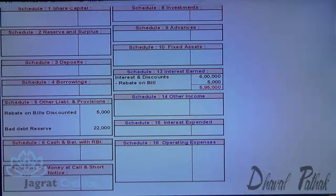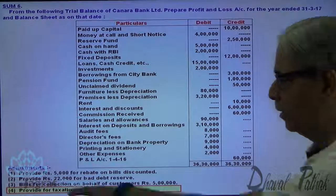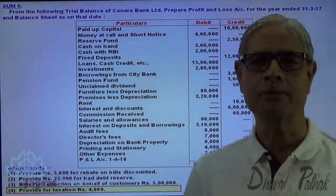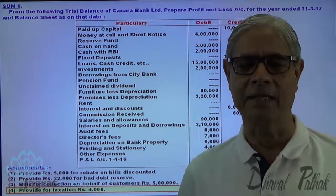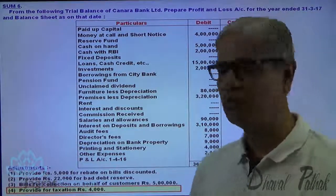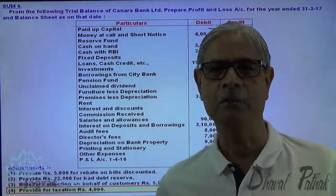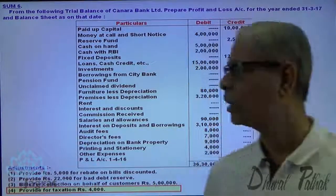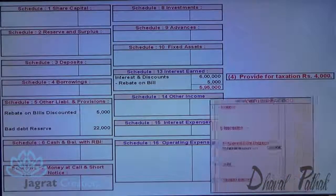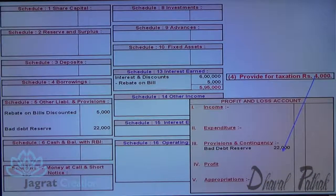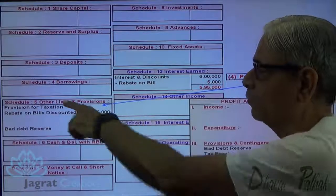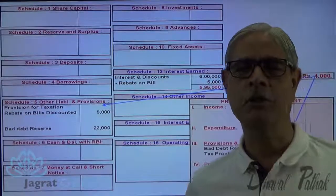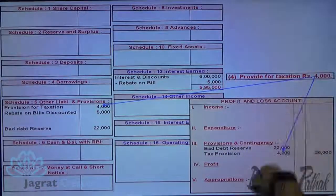Next adjustment: provision for taxation 4,000. It will appear on the face of the profit and loss account under provisions and contingencies, and the second effect of provision for taxation will appear in schedule 5. So provisions and contingencies will include the tax provision, and the second effect — provision for taxation — goes to other liabilities and provisions, schedule 5. This is how this adjustment's effects are given.